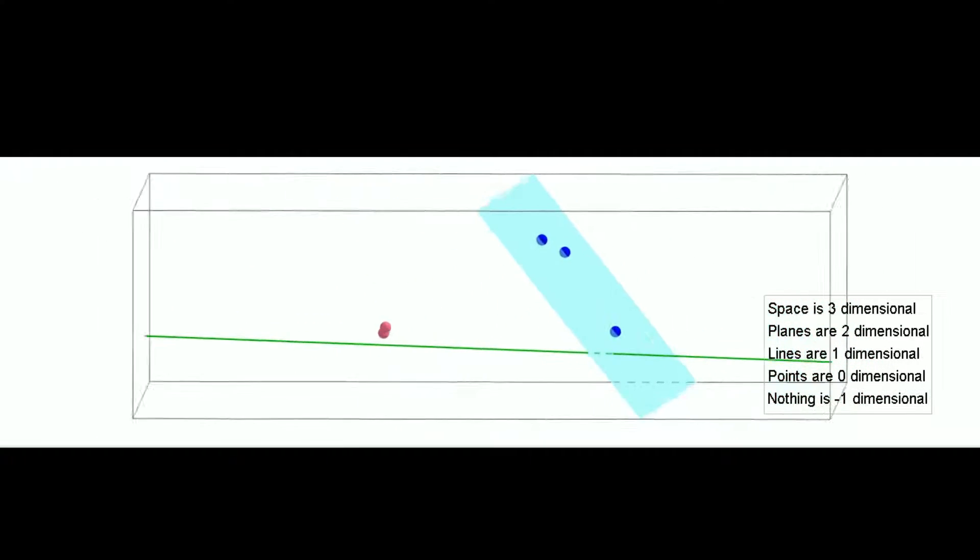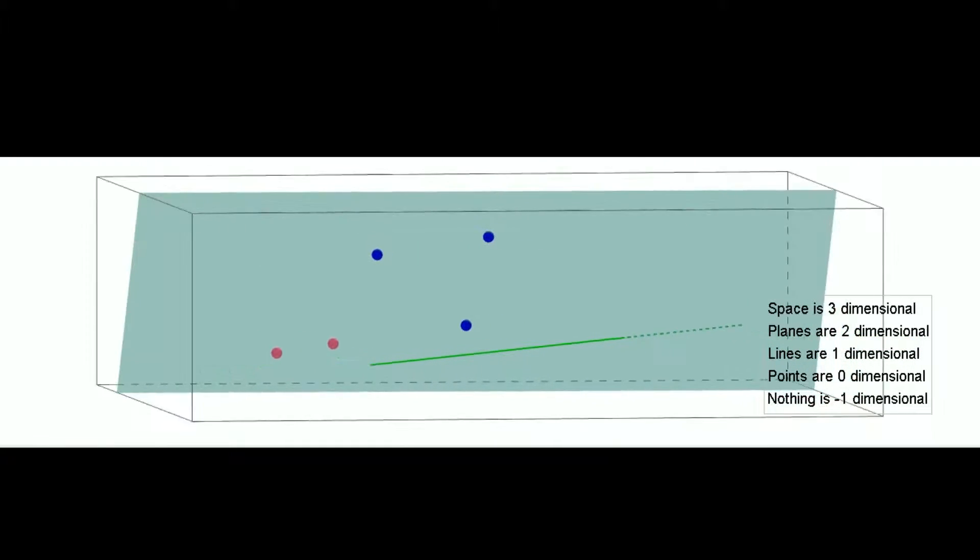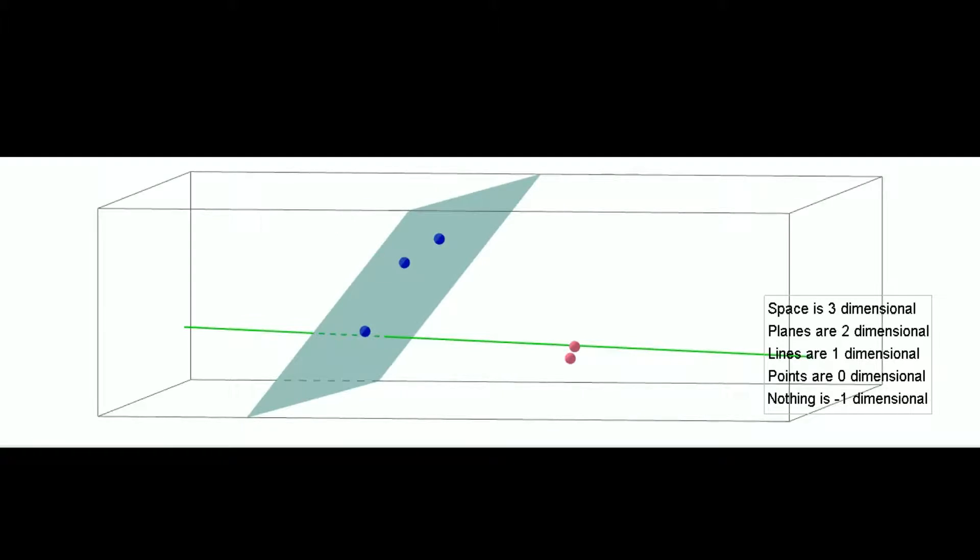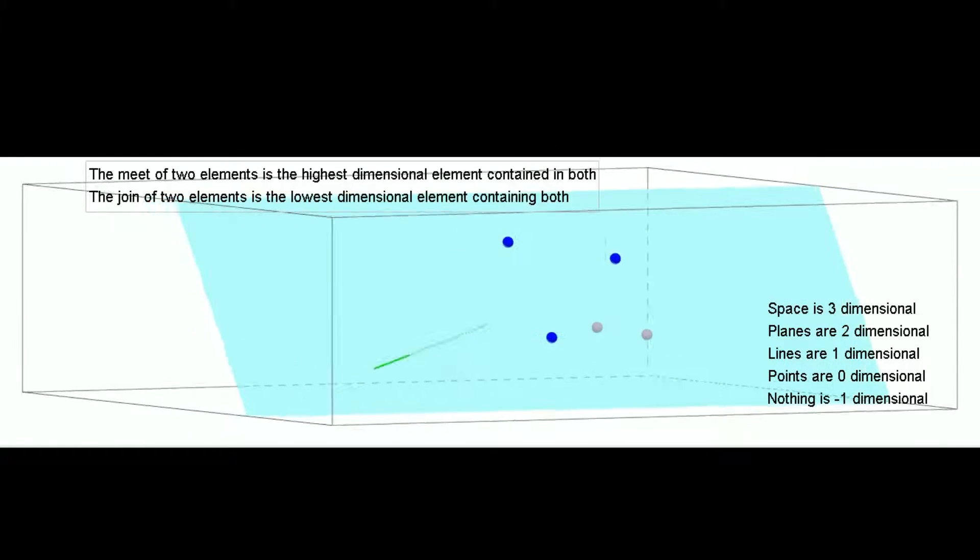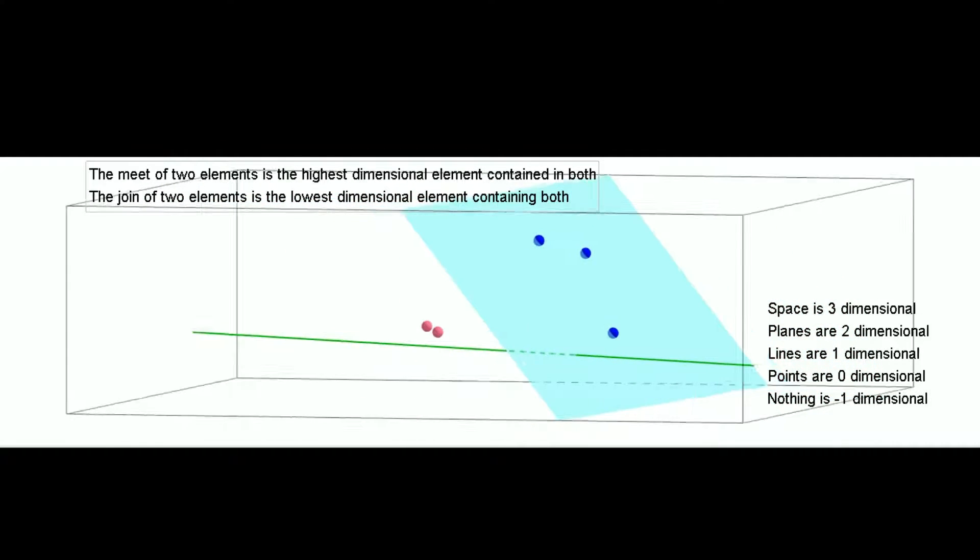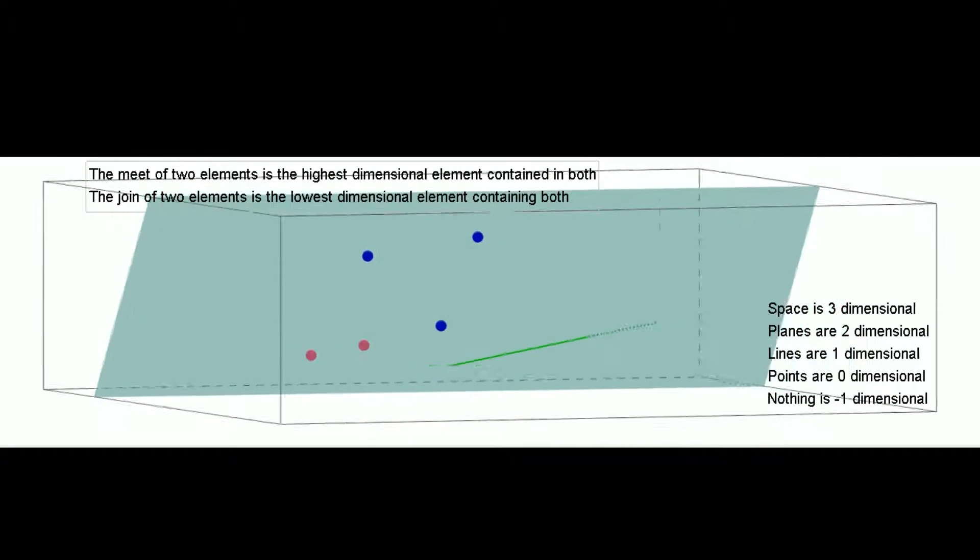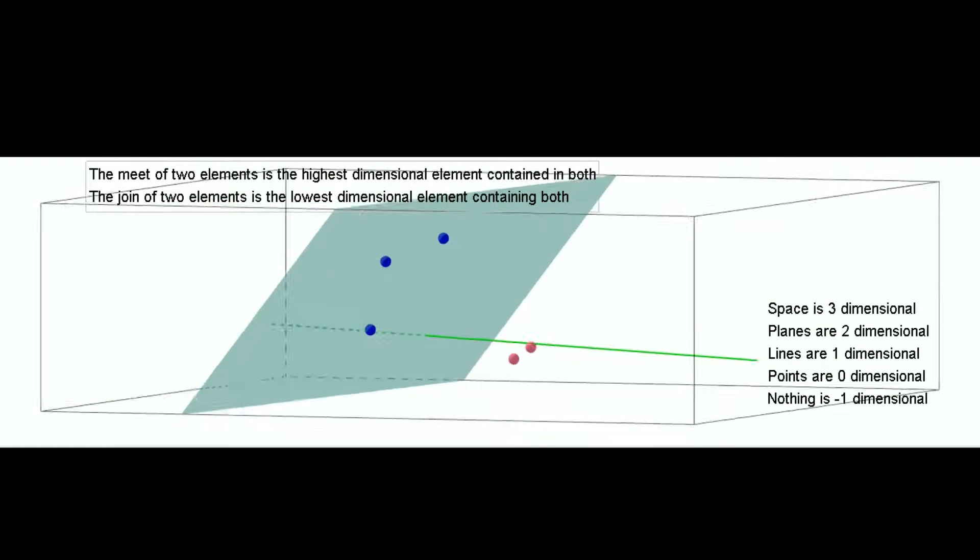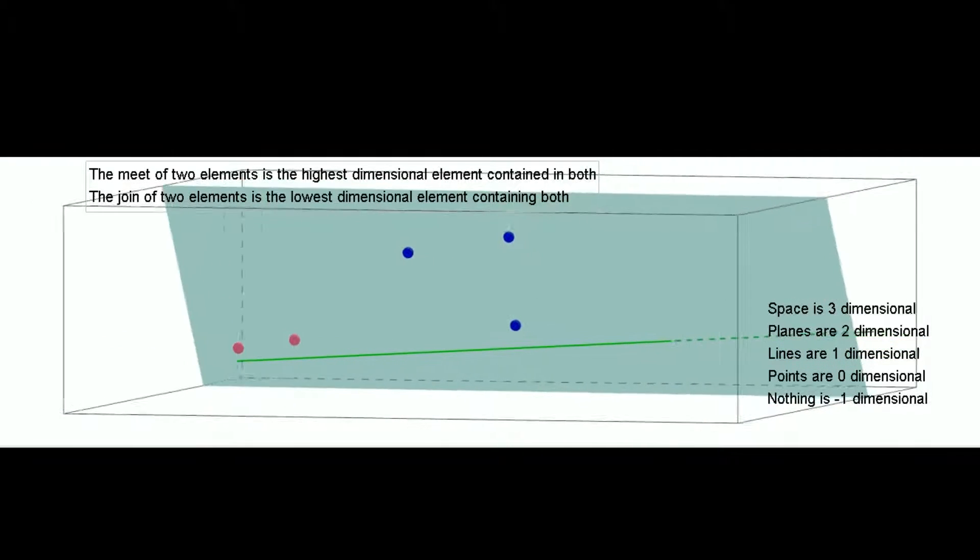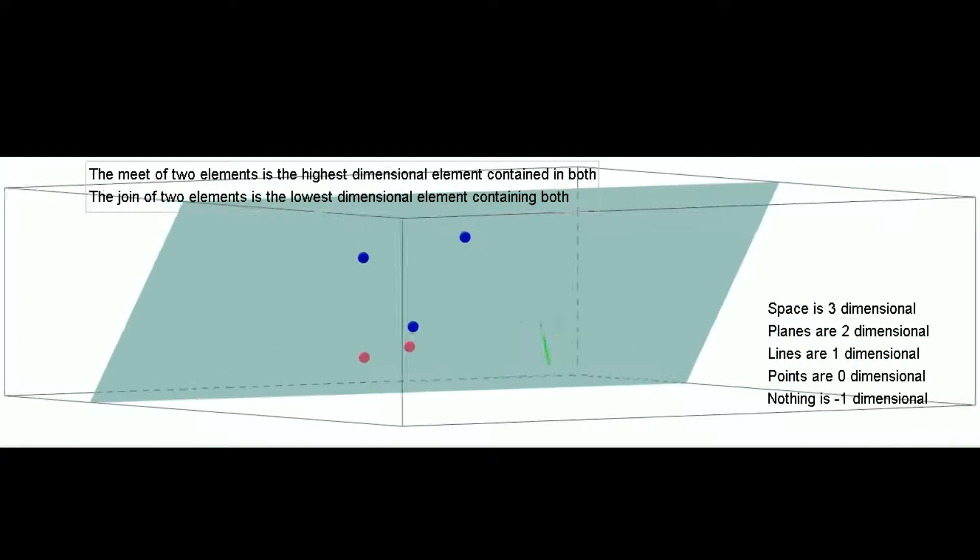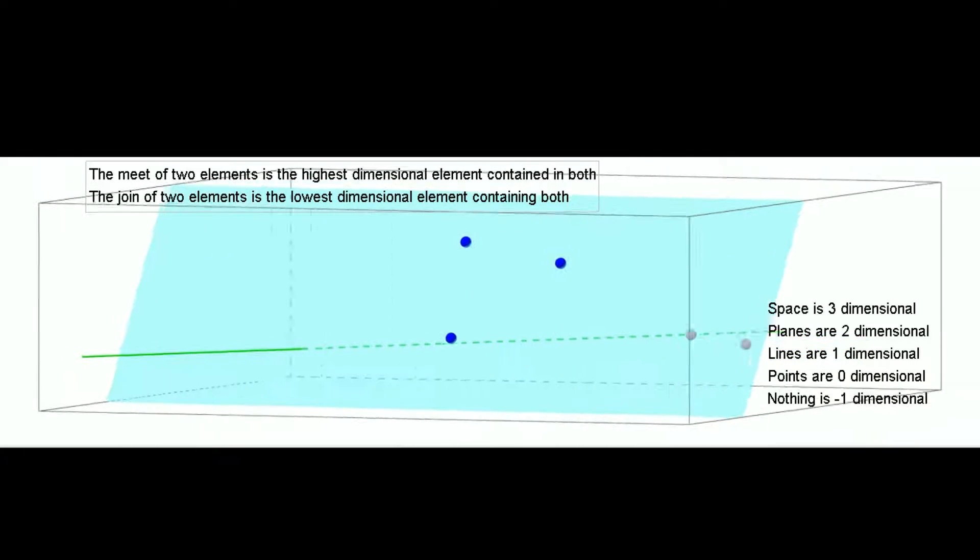Now, there's two different, particularly important operations that we can do between a pair of these so-called elements of 3D projective geometry. And those are the meet and join operations. So, the meet of a pair of elements is going to be the highest dimensional element, which is contained within both of them.